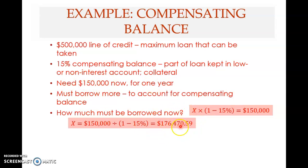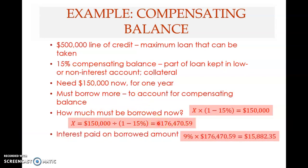15% of $176,470.59 goes toward the compensating balance in an account that earns no interest. Interest is paid on the full borrowed amount at 9% per annum. Since this is for one year, you pay 9% interest on $176,470.59 — not on $150,000 — so the interest payable at the end of the year is $15,882.35.